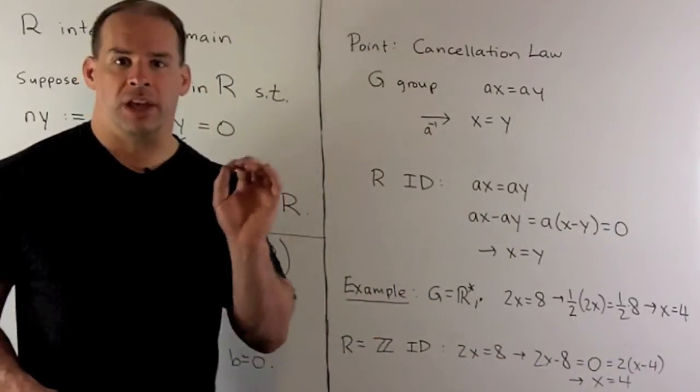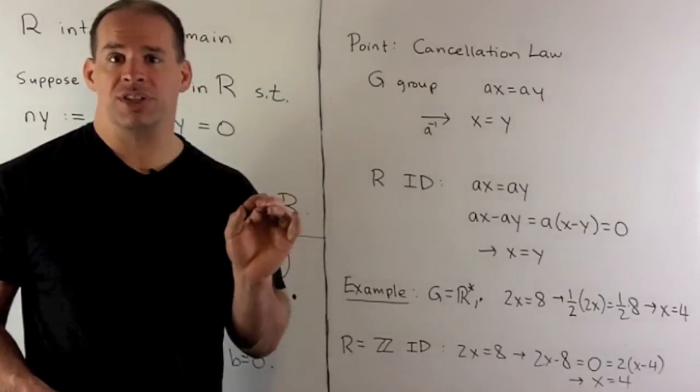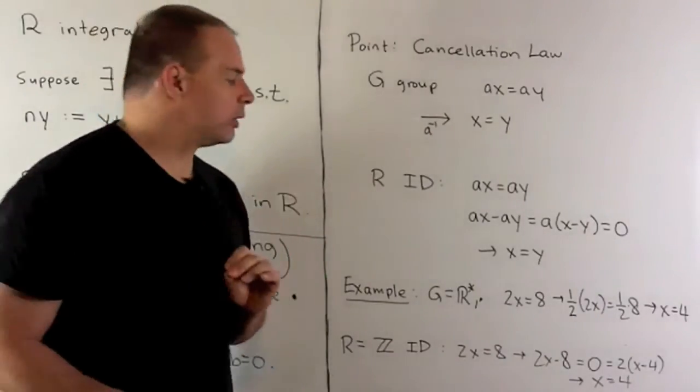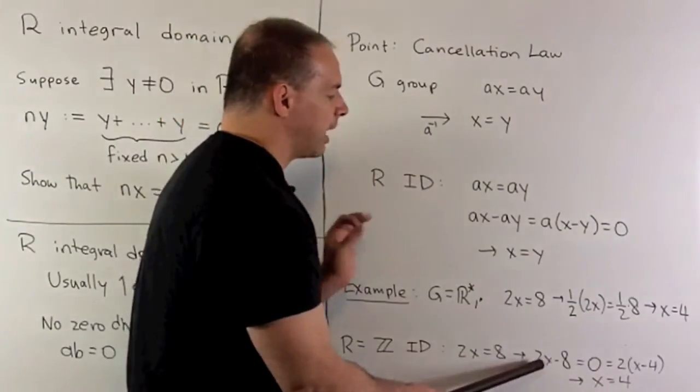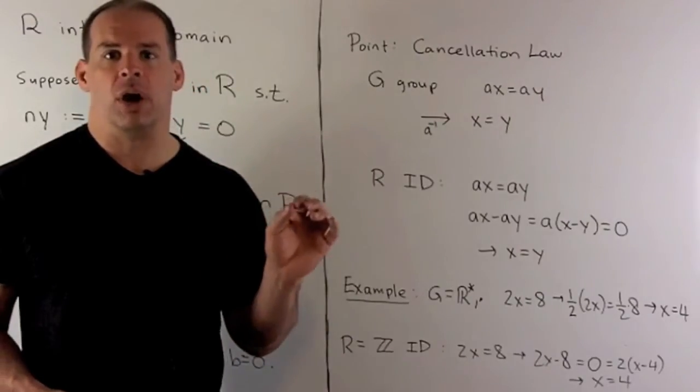If we do this over the integers, I don't have access to multiplicative inverses. So the way we go here would be, we're going to move the eight to the other side. I factor out a two. We have two times x minus four is zero.